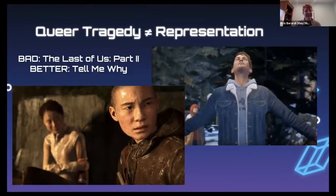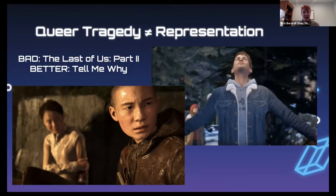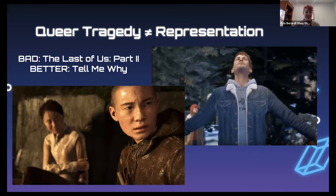The next concept I'm going to discuss is queer tragedy — when queer characters in media are only allowed if they suffer due to their queer identity. In The Last of Us Part 2, Lev is a trans character who is ostracized and hunted by his community because of his transgender identity. While the game deals with lots of suffering, the other characters suffer because of their choices and the apocalyptic environment, whereas Lev suffers specifically because of his transgender identity.